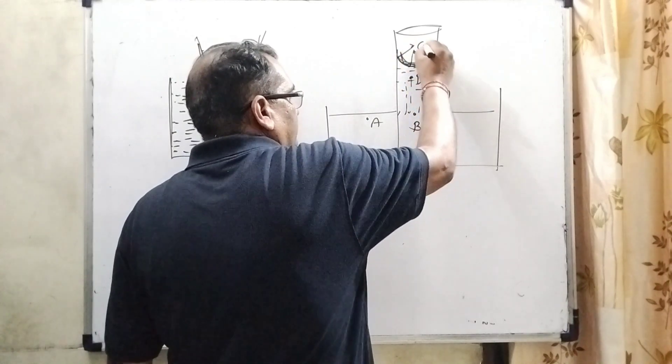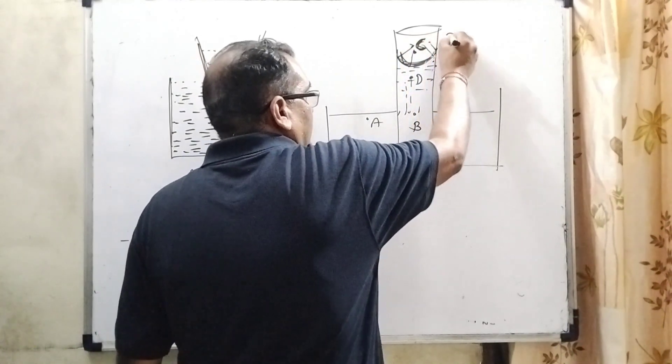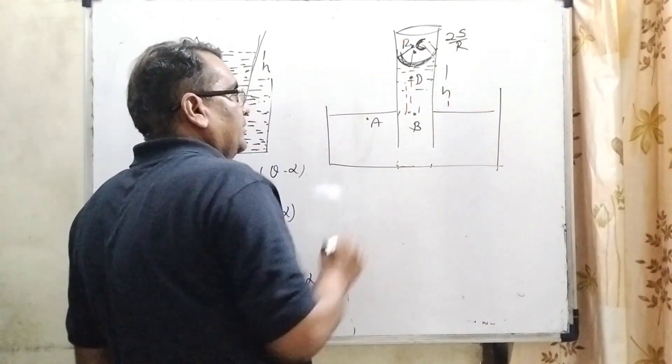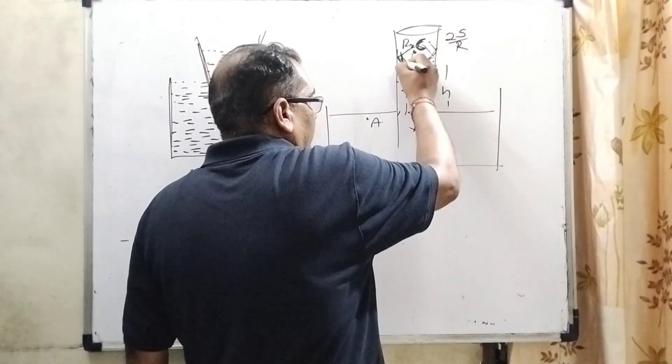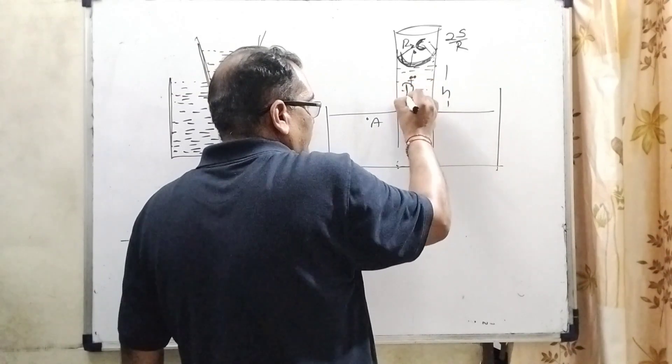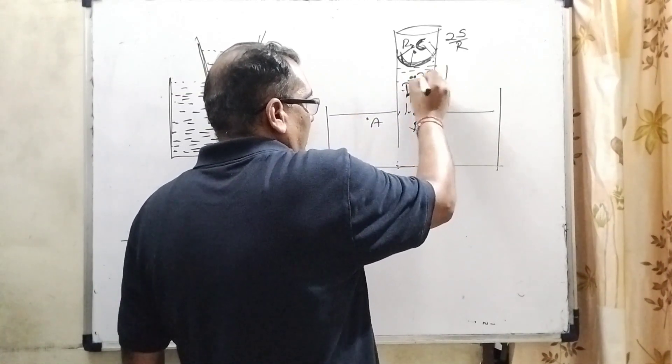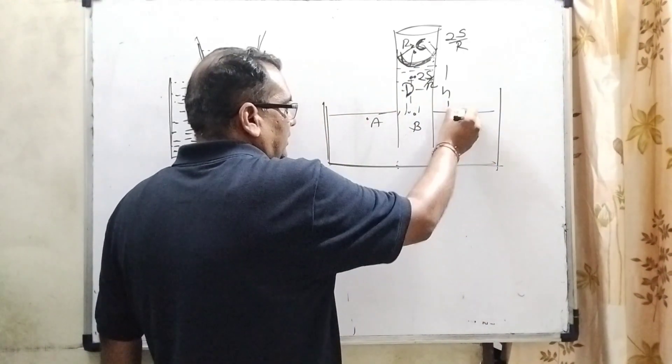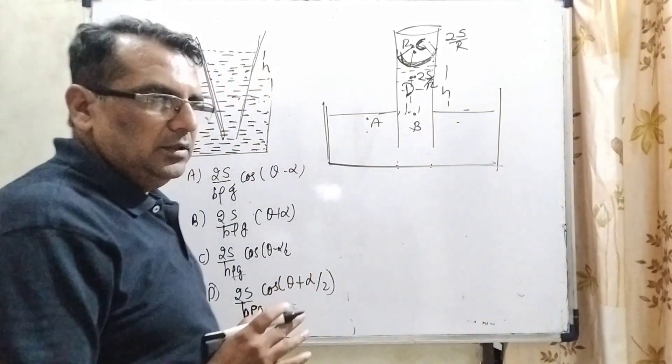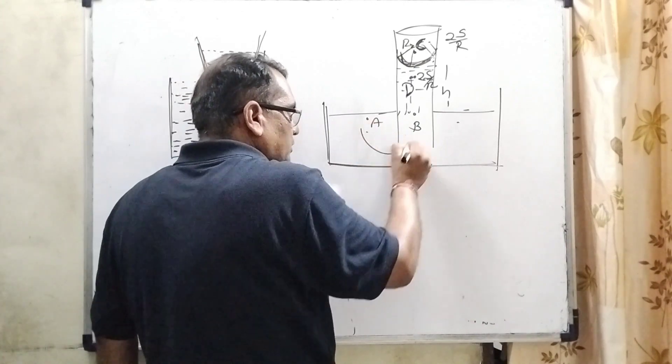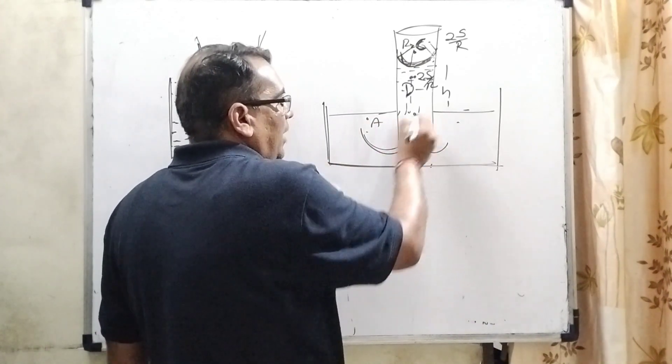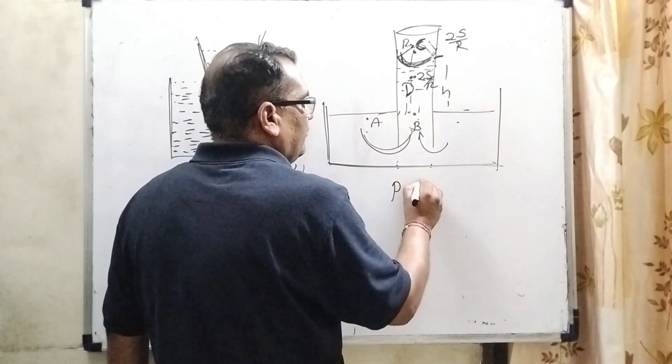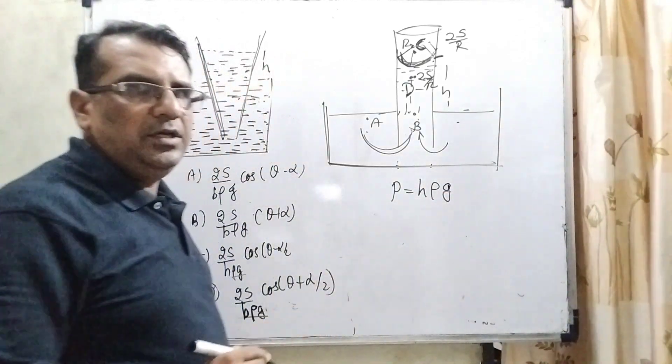And due to this concave meniscus, the pressure excess at the point of c is 2s by r, where r is the radius of this meniscus and s is surface tension. And so therefore, inside of the liquid, let us consider this point is d. Here, 2s by r, the pressure decreases. As you know that, in Pascal's rule, inside the liquid, everywhere the pressure is equal. But here, the pressure decreases. And so therefore, water flows from the outside to the inside of this capillary up to the balance or equilibrium of this pressure. And this pressure is equal to h rho g. This concept we are using to solve this question.